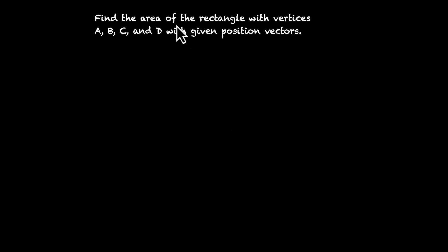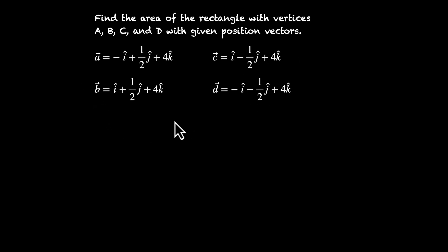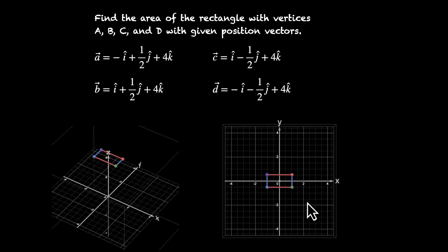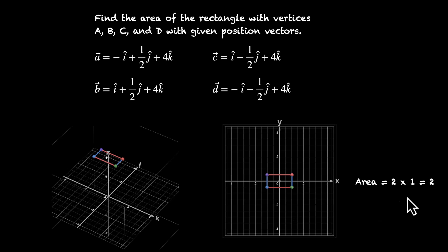One last problem: find the area of the rectangle with vertices A, B, C, and D with the given position vectors. If you've observed the pattern, you're probably not finding the cross product here. You can see that all four vertices are at a height of 4 units from the XY plane — all have 4k̂. Visualizing this, the rectangle sits at height four. Looking from the top, the X coordinates are −1 and 1, giving a length of 2 units, and the Y coordinates are 1/2 and −1/2, giving a breadth of 1 unit. So the area of this rectangle is 2 × 1 = 2 square units — no cross product needed.